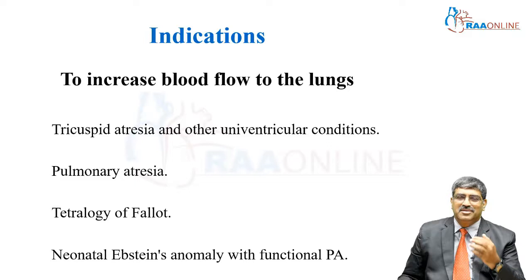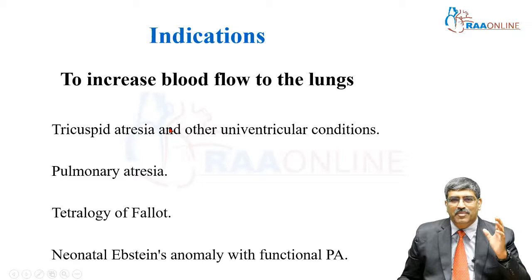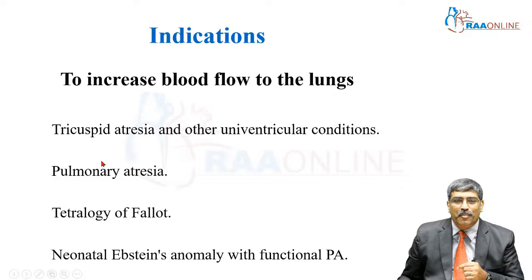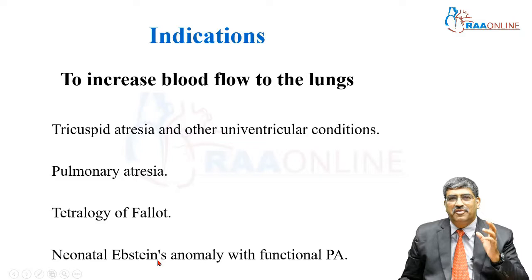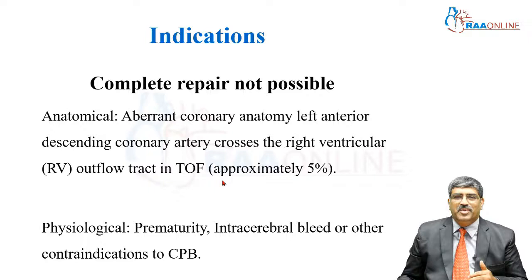What are the indications for BT shunt? The first and foremost condition is to increase the blood flow to the lung. Reduced pulmonary blood flow can occur in tricuspid atresia and other univentricular conditions, pulmonary atresia, tetralogy of Fallot, and neonatal Ebstein anomaly with functional pulmonary atresia. These are the conditions where blood flow to the lung is compromised and where you have to perform the shunt at the earliest.